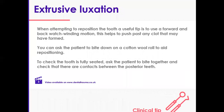A good tip for repositioning: use gentle but firm digital pressure with a watch-winding motion back and forth to work through any clotting at the apex. Sometimes you cannot reposition because of that clot, so you need to gently rock through it. Use a gauze or cotton roll for the patient to bite on to help with positioning. Also, watch the clinical repositioning clip on the Dental Trauma UK website members area.